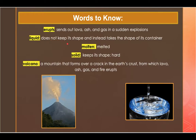The next word to listen for is molten. Molten means melted. An example of this is it takes very high temperatures to melt metals into molten forms.